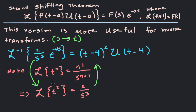Normally 2/s³ goes back to t². However, we don't just go back to f(t) — we go back to f(t-a), so t² becomes (t-4)². The e^(-4s) part goes back to u(t-4). So the inverse transform gives us (t-4)²·u(t-4), using this translation theorem in reverse.